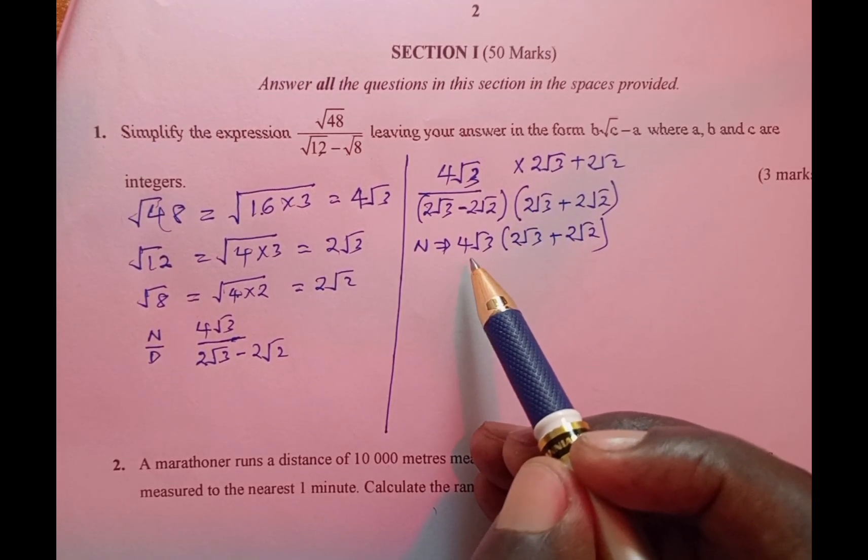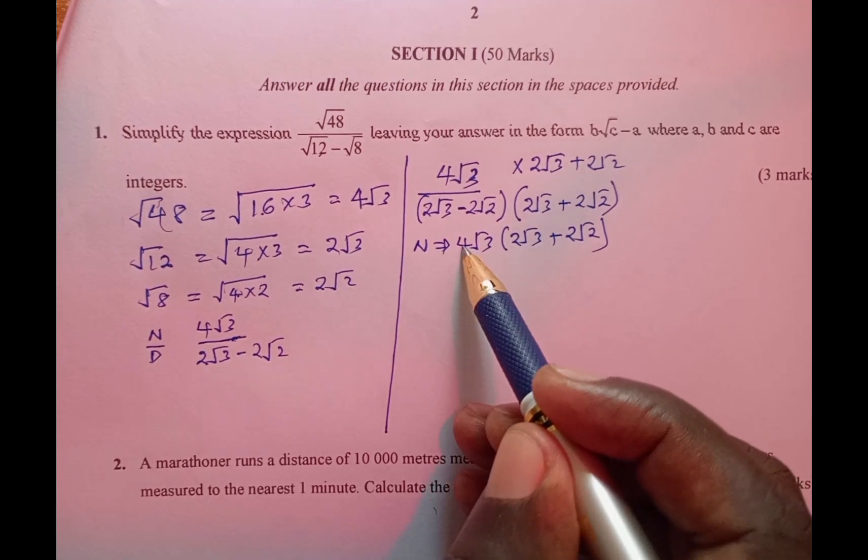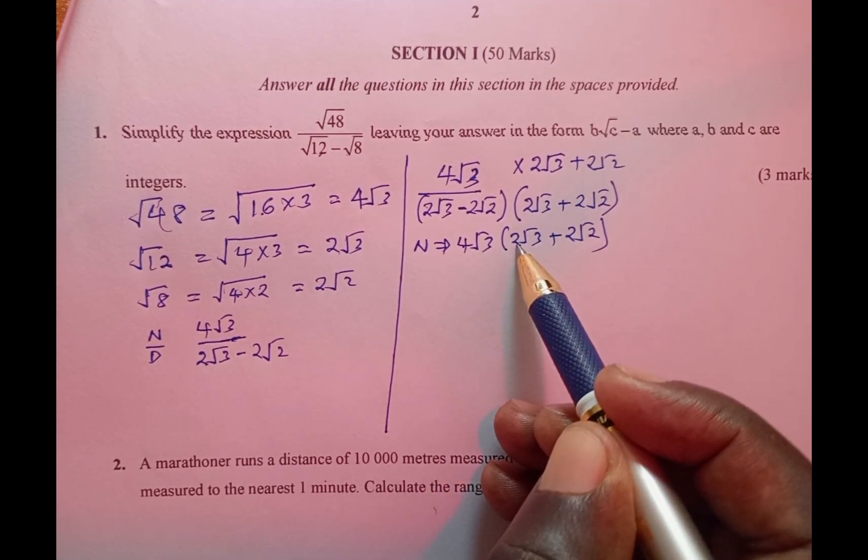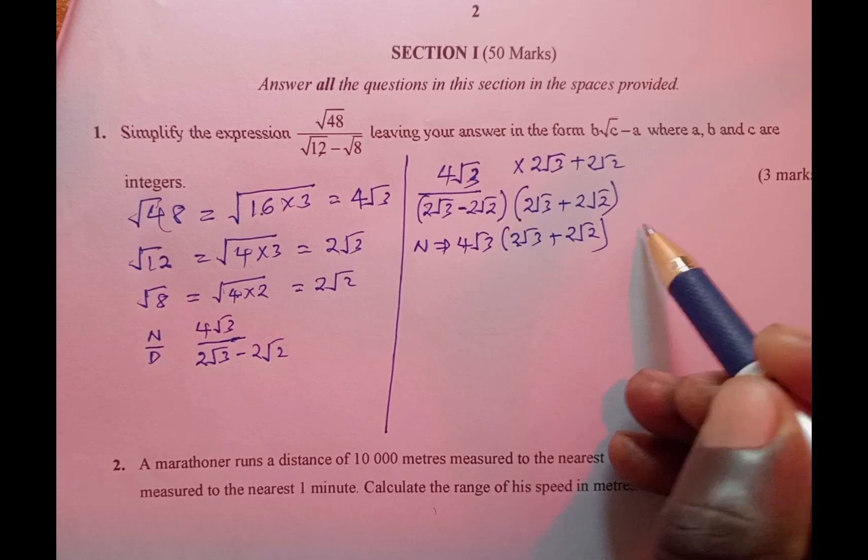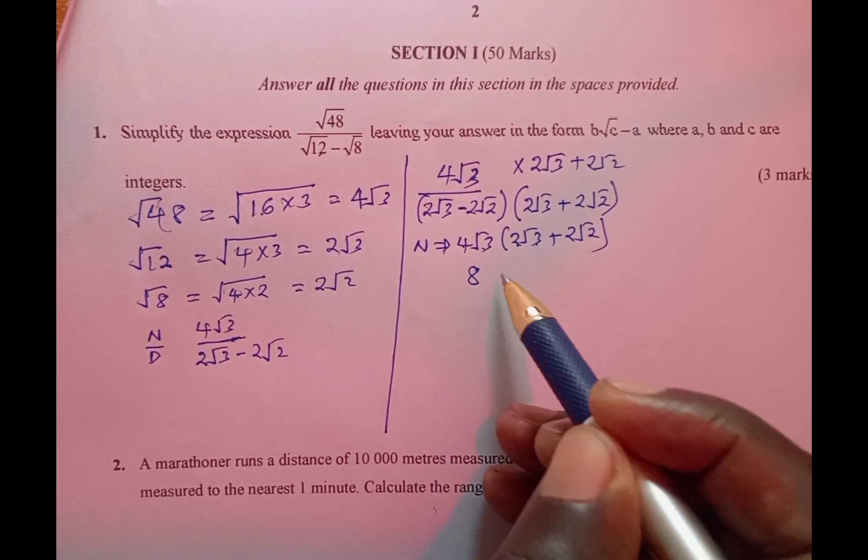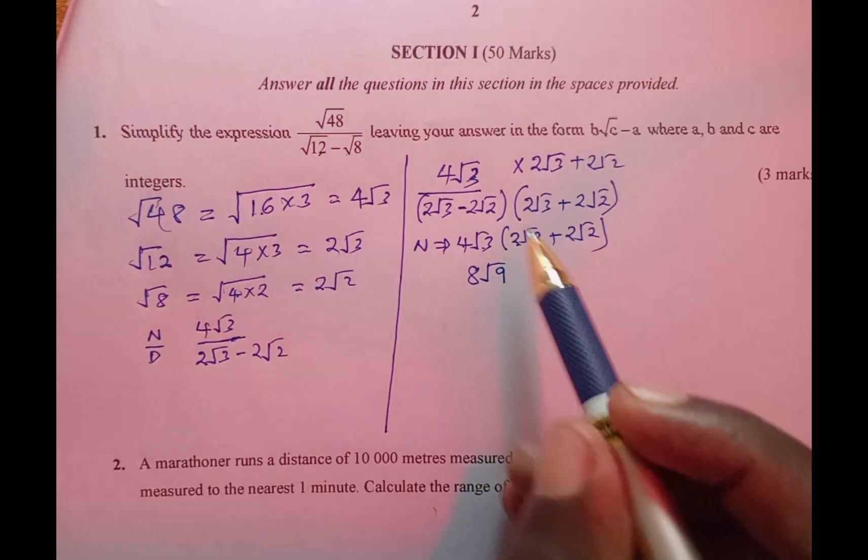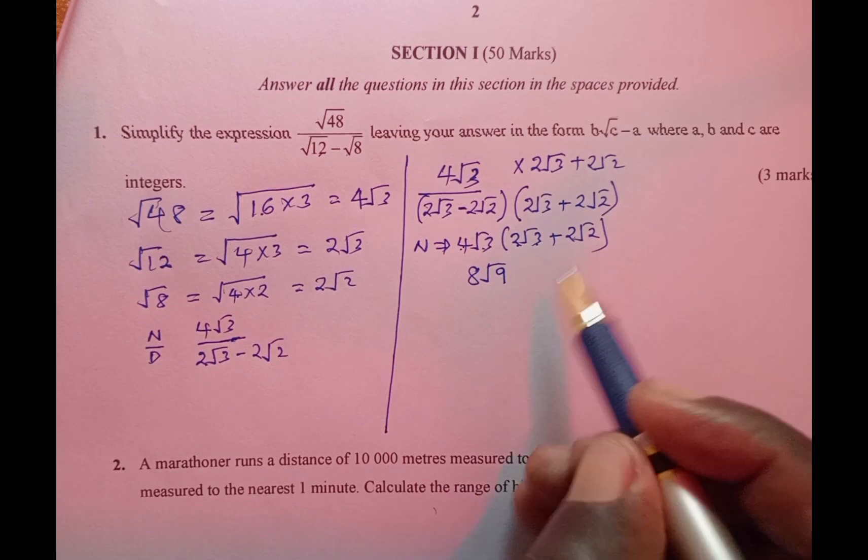Following the rules of multiplying surds, we have 4 times 2 which is 8, then √3 times √3 giving us √9. Then again 4 times 2, you get a positive 8√6.